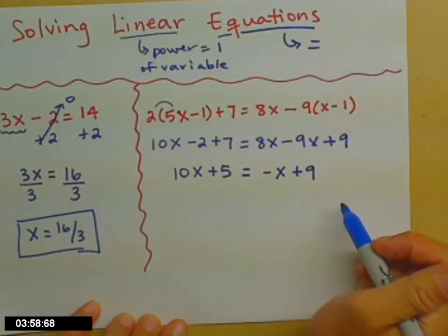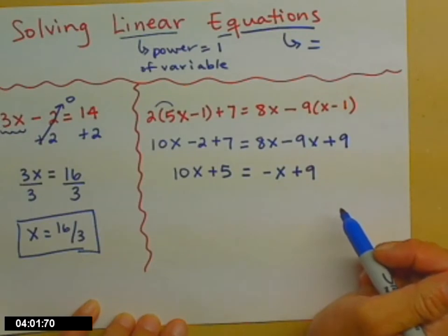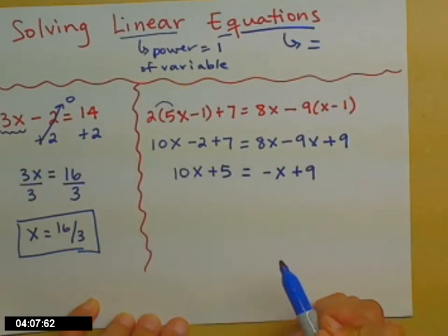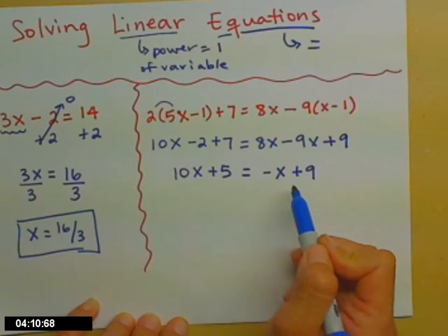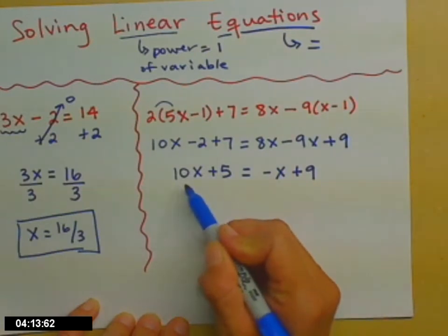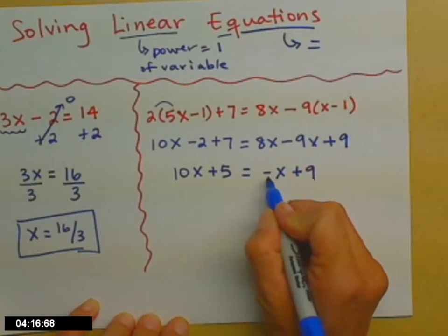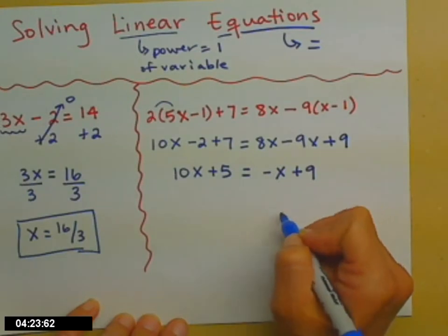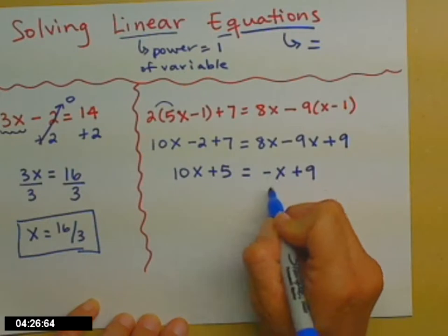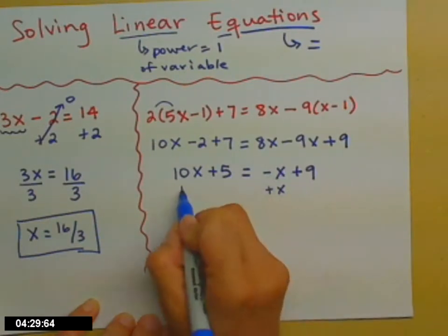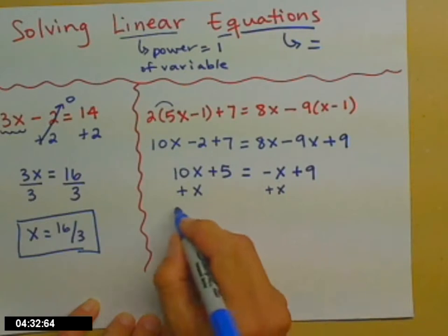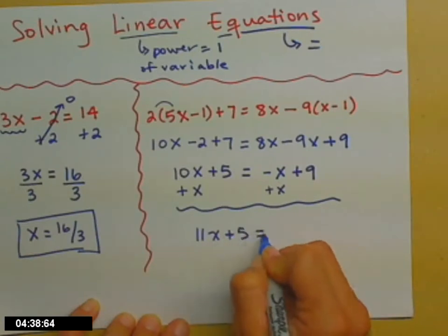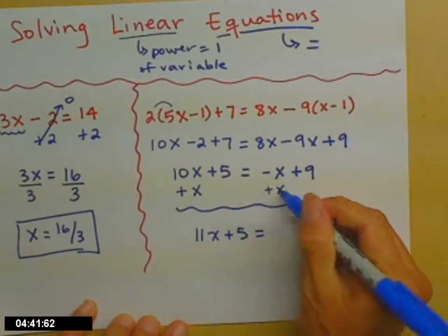Next, let's get all the x terms together on one side. It doesn't matter which side — I'll tend to move mine so that the x coefficient stays positive. Coefficient is the number multiplying in front. I have a minus x on the right; to move it to the other side I do the opposite, adding the positive x. We add and subtract when moving terms, and multiply or divide when moving coefficients. So 10x plus x is 11x plus 5 equals — the x's are now gone on the right, since minus x plus x is 0.